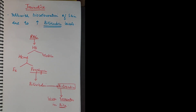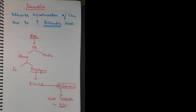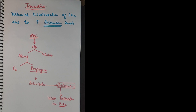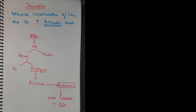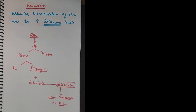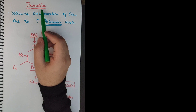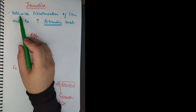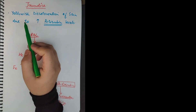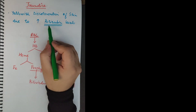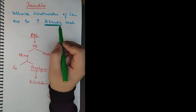In our last video we discussed disorders of RBCs. Today we are going to discuss a very important topic: jaundice. Hello students, I am Dr. Faisal and you are watching Bio Ocean Classes. Let's get started. Jaundice means yellowish discoloration of skin and mucous membranes due to increased bilirubin levels. Two words are very important: yellowish discoloration and increased bilirubin.